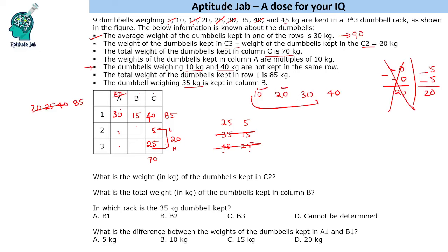Now can we make a total of 90 in this row? This is 5, so can we have 85 using two numbers? 40 and 45 cannot be used because 40 is already used. So this cannot be total as 90. So this total should be 90.